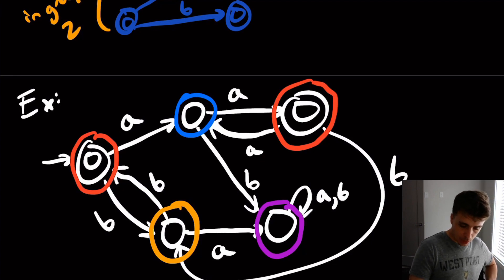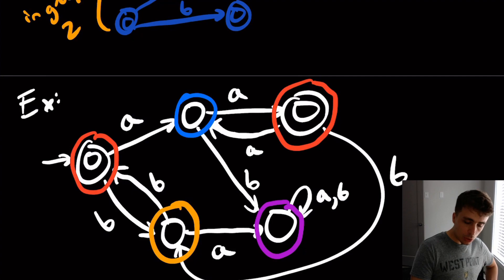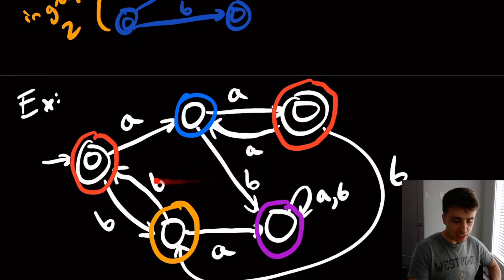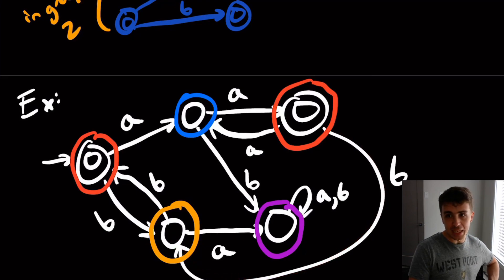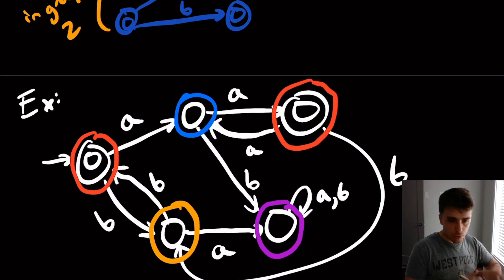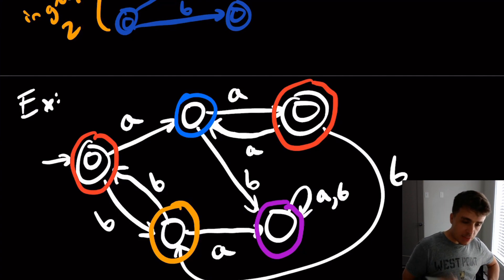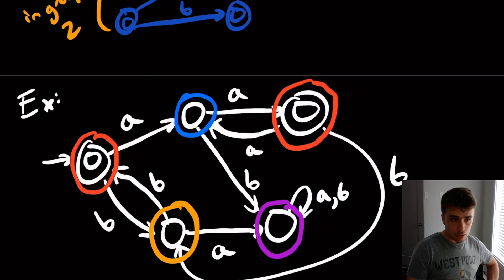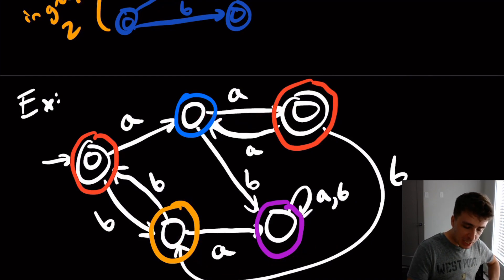These three are obviously going to be different — they're in different groups now. The only possible pair of states that might be the same are the two red states. On input A, they go to the same state. On input B, they go to the same state. They don't have to go to the exact same state to be equivalent — as long as they go to either final or non-final states, that's sufficient. And if they go to the same group, that's fine too.